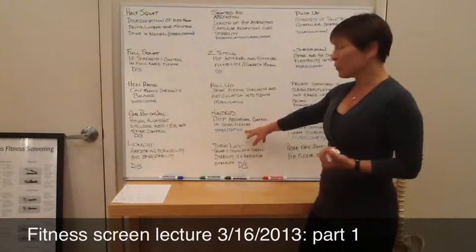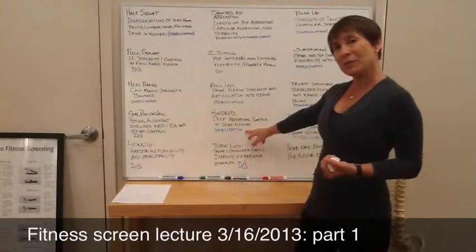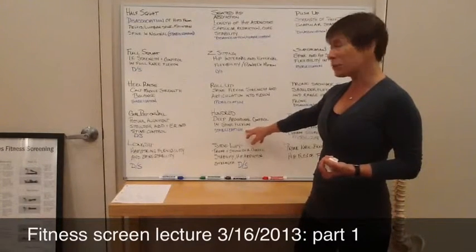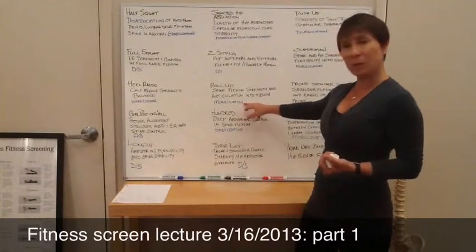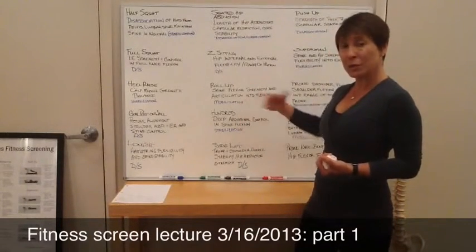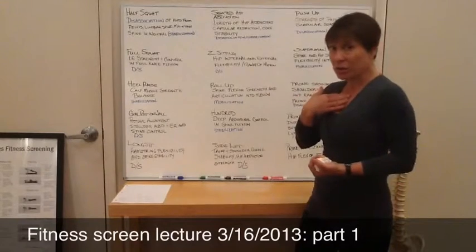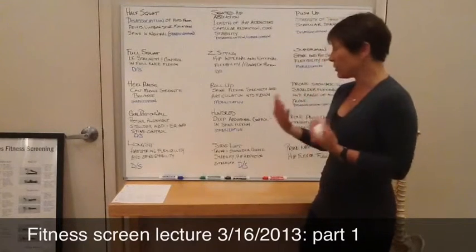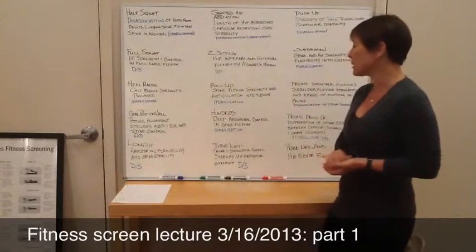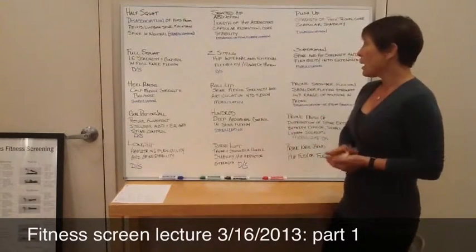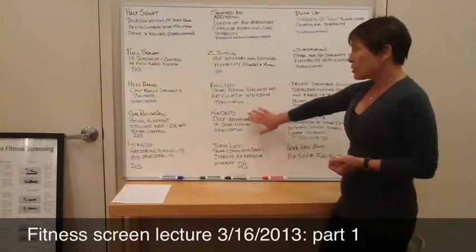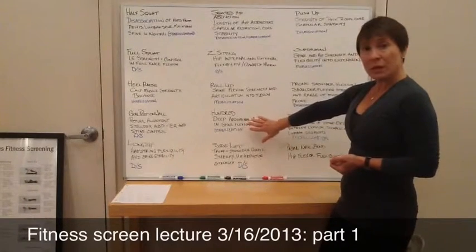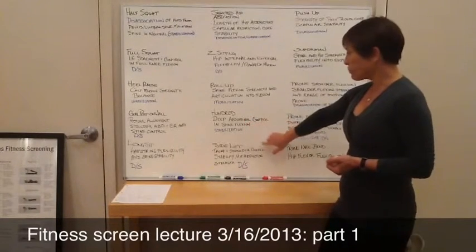For the roll-up, we're looking at spine flexor strength and articulation into flexion — segmental articulation and abdominal strength as spine flexors. Since we're looking at articulation, we've switched from disassociation and stabilization into mobilization. The hundred tests deep abdominal control in spine flexion, in a sustained position of upper spine flexion. You've got elements of stabilization, but also mobilization in a limited part of the spine.